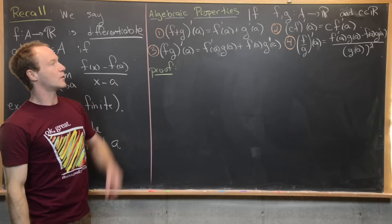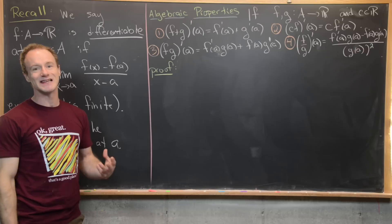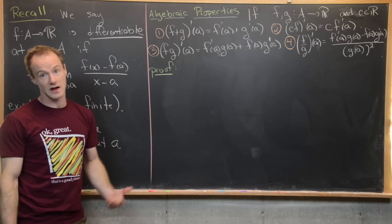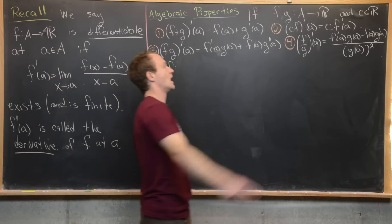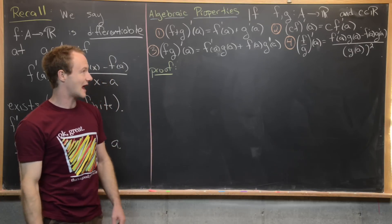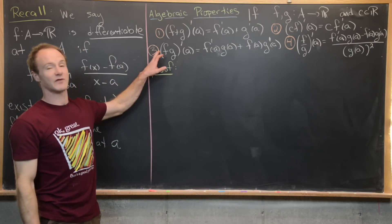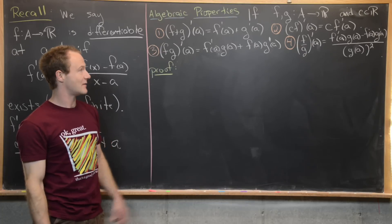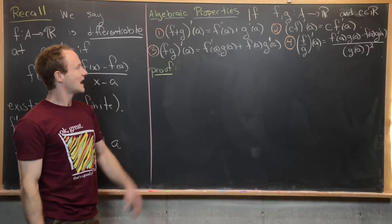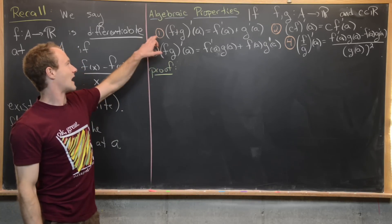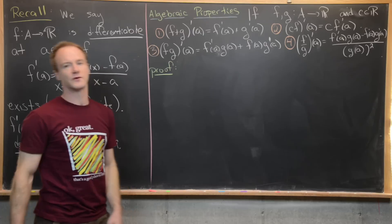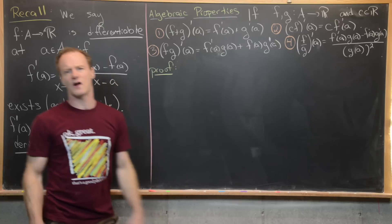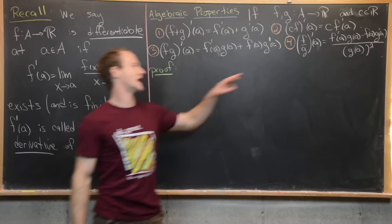So we have two functions f and g going from A to the real numbers, and c is just a real number. We have the sum rule: (f + g)' (a) = f'(a) + g'(a). A constant multiple rule: (c·f)'(a) = c·f'(a). And the product rule: (f·g)'(a) = f'(a)·g(a) + f(a)·g'(a), and then the quotient rule as well. We'll prove the product rule here; I'll leave the sum rule and constant multiple rule for you to check. The quotient rule will follow from the chain rule, which we'll prove at the end of the video.